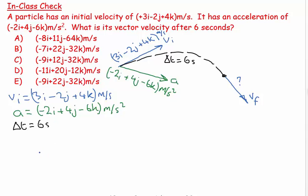I know that my time delta t equals six seconds, and I would like to find my final velocity. The equation that comes to mind which links these things is VF equals VI plus a delta t.